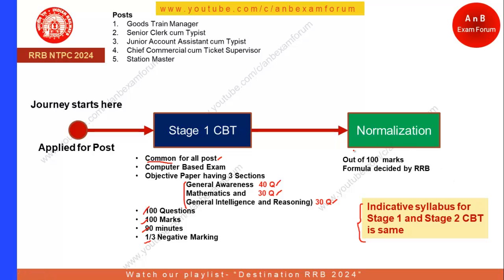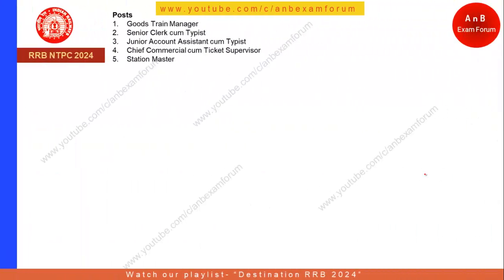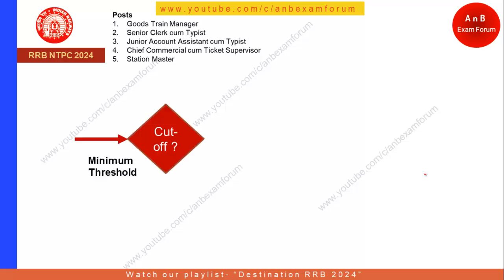Once you have given your Stage 1 CBT exam, there will be a normalization process. Since the exam will be conducted in different days, different phases, and different sessions, the difficulty level will be somewhat different for different candidates. So a normalization process is carried out, based on a formula decided by RRB. RRB will regenerate your marks based on the difficulty level at different sessions. You will then have a certain score called the normalized score.